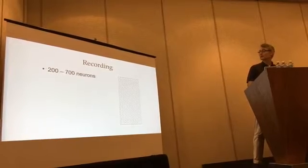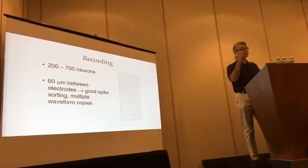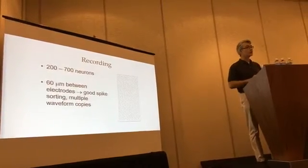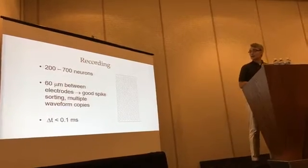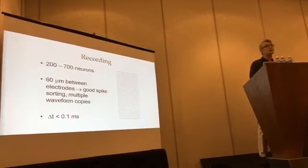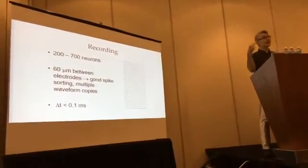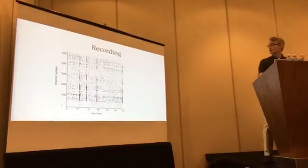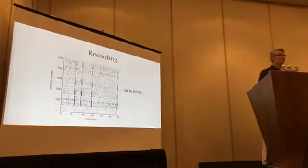We can get anywhere from 200 to 700 neurons. The electrode spacing is very tight, so we're likely to record from synaptically coupled neurons — neurons that have a physical connection. Our temporal resolution is extremely good; it's sub-millisecond. So we can definitely determine when one neuron spikes before another one, which allows us to draw that causal arrow. We also record for up to eight hours, so we can get very large data sets.